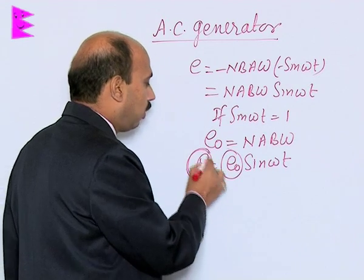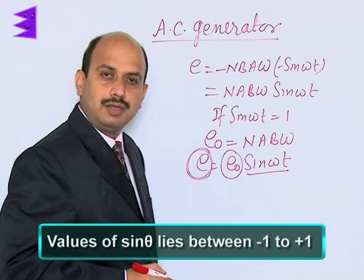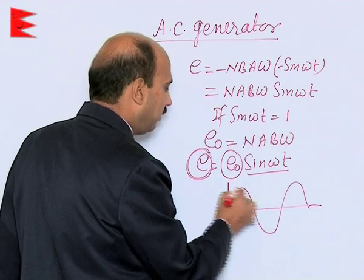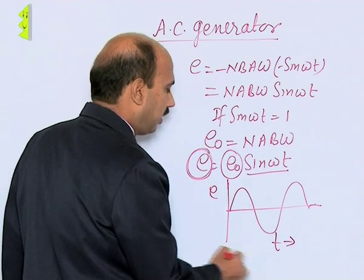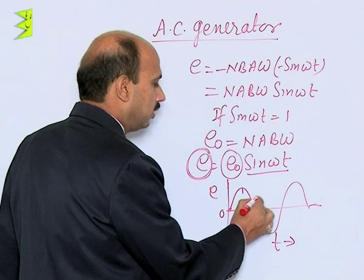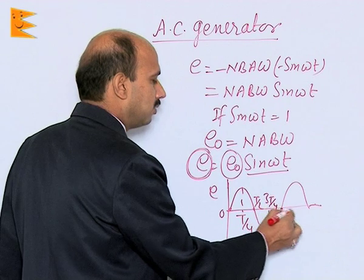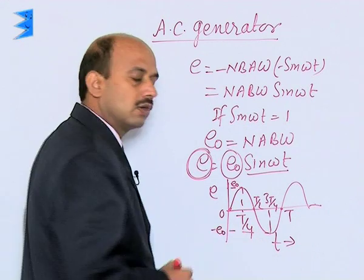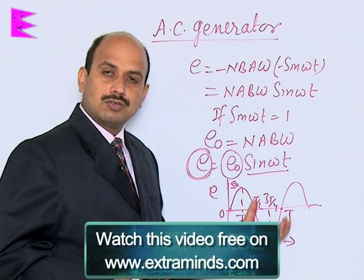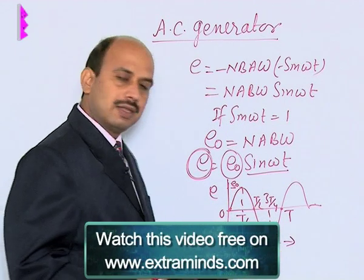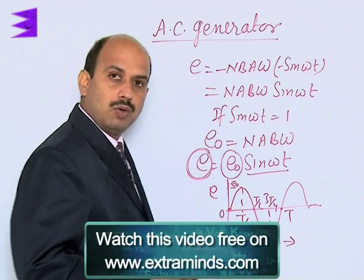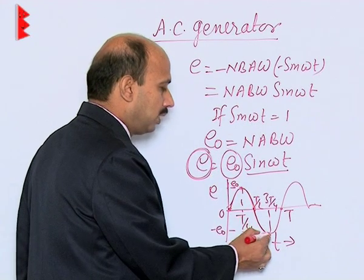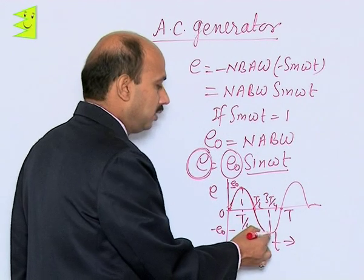The instantaneous value of EMF varies according to sin ωt. When you draw the graph, you get a sine curve with E on the vertical axis and t on the horizontal axis. At t = 0 the EMF is 0; at t/4 it reaches maximum +E₀; at t/2 it returns to 0; at 3t/4 it reaches −E₀; and at t it returns to 0. So the value of EMF oscillates between +E₀ and −E₀.